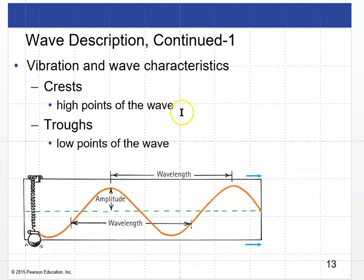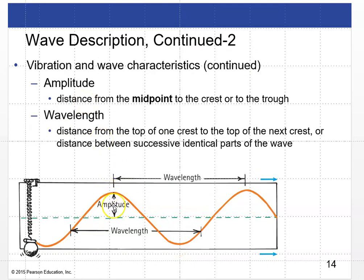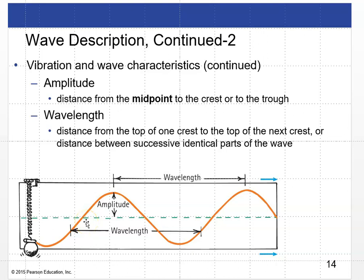We'll label some pertinent parts of the wave. Crests are the high points of the wave, and troughs are the low points. The amplitude is the distance from the midpoint to the crest or from the midpoint to the trough — one half the vertical distance between crest and trough. The wavelength is the distance from the top of one crest to the top of the next crest, or between two successive troughs, or any two successive identical parts of the wave.